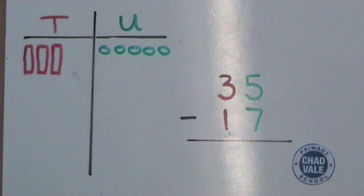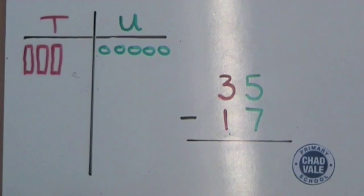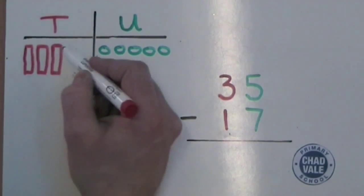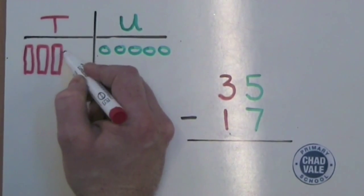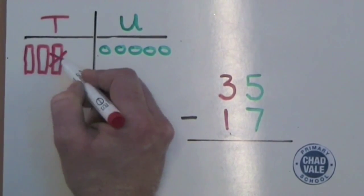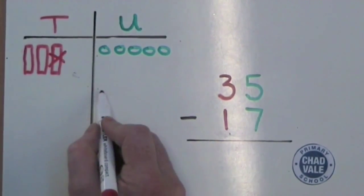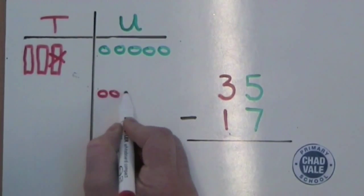Next we think: five units subtract seven units. Of course we can't do this, so we cross out a tower of 10 and break it up into 10 units.